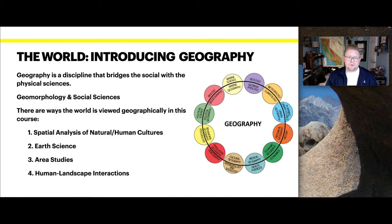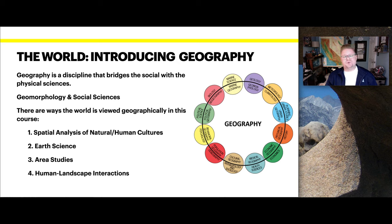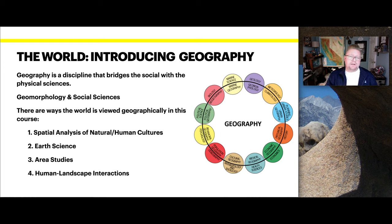To begin, we need to introduce what geography is. Geography is a discipline that bridges the social with the physical sciences — things such as geomorphology and social sciences. Geomorphology is learning how the Earth is changing and how we can study that, and social sciences deal more with people and culture.